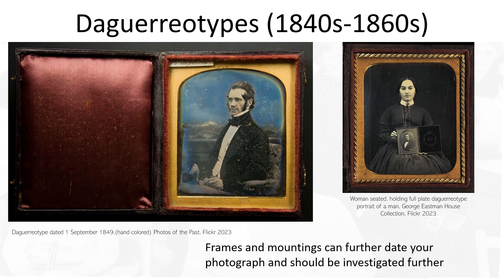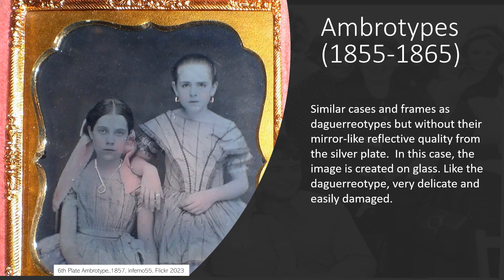If you know who the subject is, you probably don't need to do extensive dating. An ambrotype is a type of photographic image that became popular after the daguerreotype. Although at first glance it has a similar look, it is a positive image made on a piece of glass rather than metal.